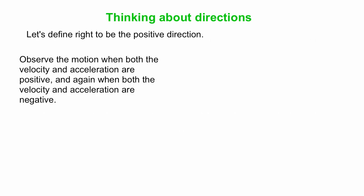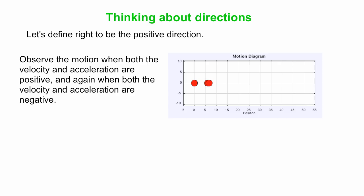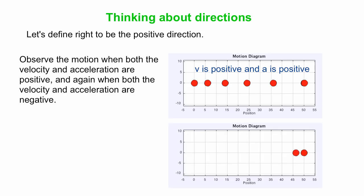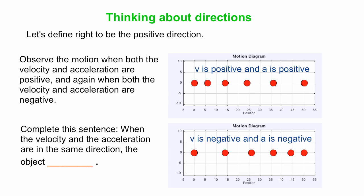Let's think about direction. Some people get confused by what positive or negative acceleration means. Here we'll define right to be the positive direction. First, we'll observe the motion when both velocity and acceleration are positive — in other words, both directed to the right. What you see on the motion diagram is the dots get further and further apart as time goes by. When the velocity and the acceleration are in the same direction, the object speeds up.